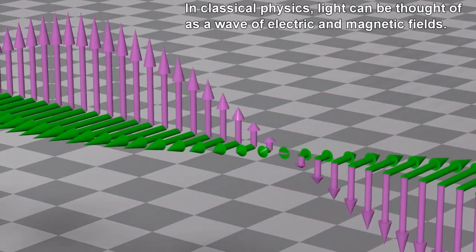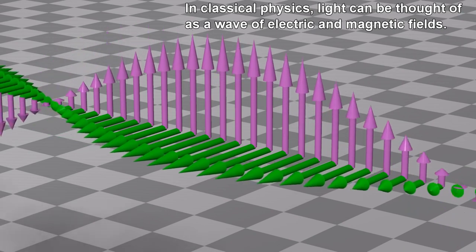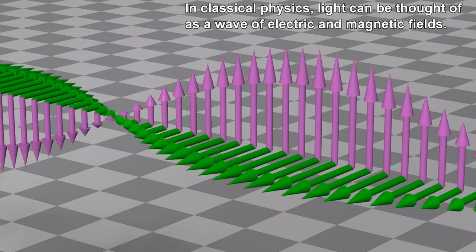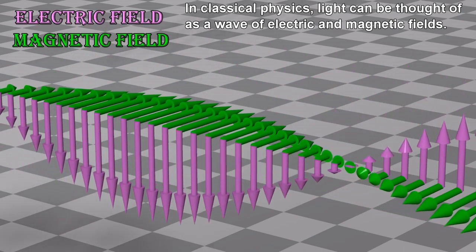In classical physics, light can be thought of as a wave of electric and magnetic fields.